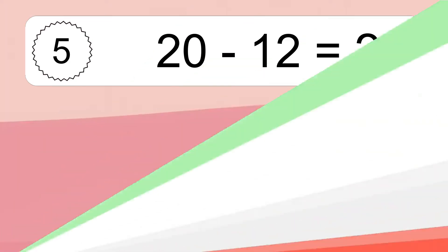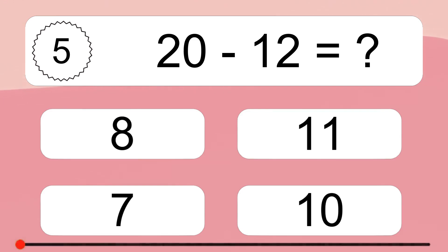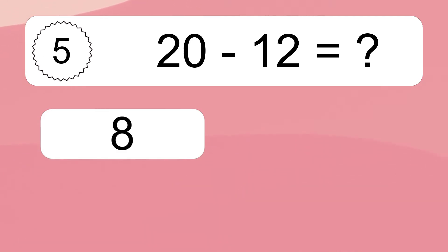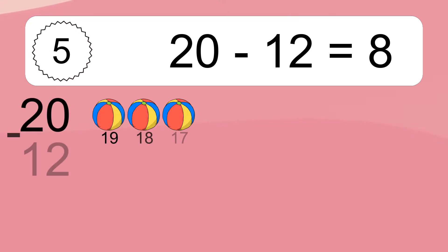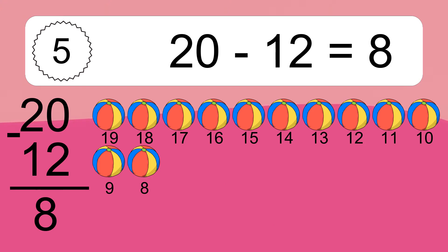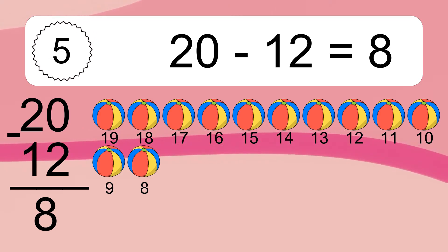20 minus 12 equals what? 20 minus 12 equals 8. Let's count it: 19, 18, 17, 16, 15, 14, 13, 12, 11, 10, 9, 8.